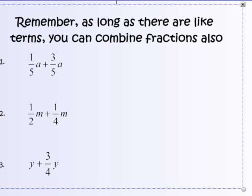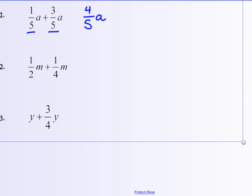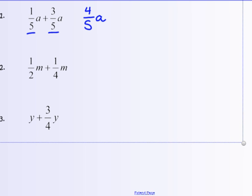Another example here: as long as they are like terms, you can just combine those fractions. So I happen to have common denominators here. One-fifth a and three-fifths a—well, they have a common denominator, I get four-fifths a. One-half m plus one-fourth m—they are like terms, I can add them together. One-half and one-fourth, I'm going to make this into two-fourths. Two-fourths is one-half. Two-fourths m plus another one-fourth m gives me three-fourths m.